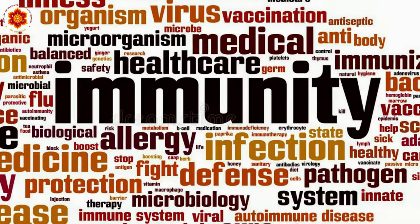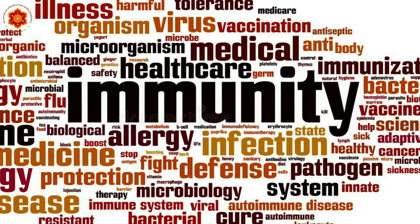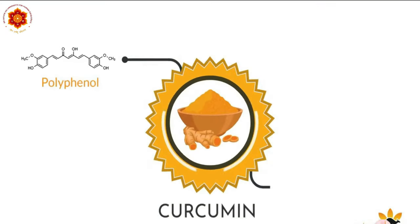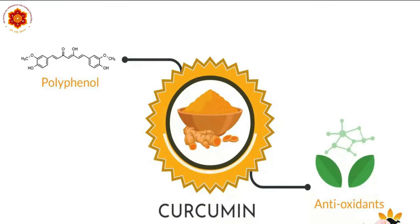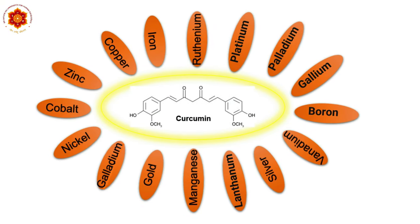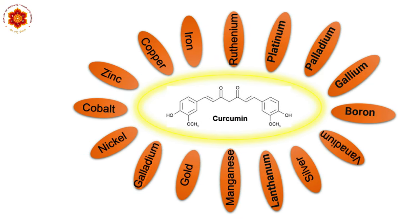In order to overcome a pandemic, people need immunity and there are various ways to achieve this. One effective way is through use of Curcumin, which has many healing properties such as antioxidant, antimicrobial and anti-inflammatory activities. Curcumin interacts with various metals and forms a metal-curcumin complex.